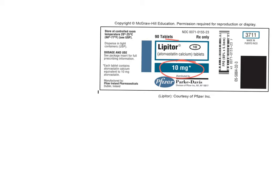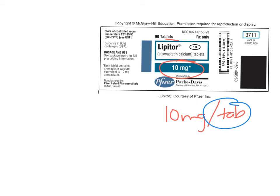This dosage on the label is how much is in one tablet. We don't see '10 milligrams per tablet' on the label because that's implied — we understand that's going to be true. So our quantity with tablet medications is always going to be one.